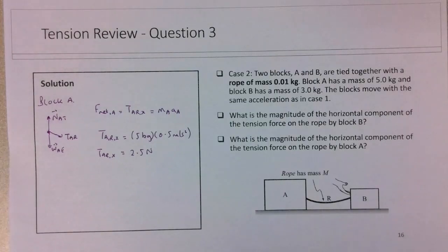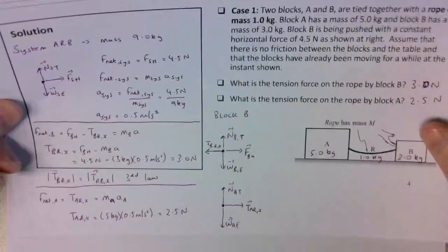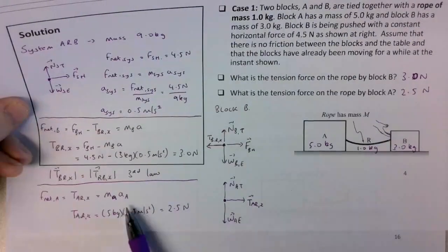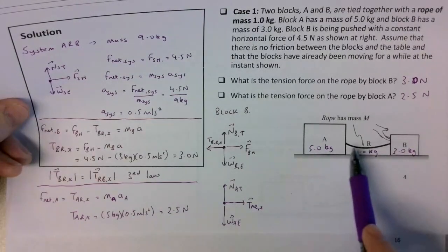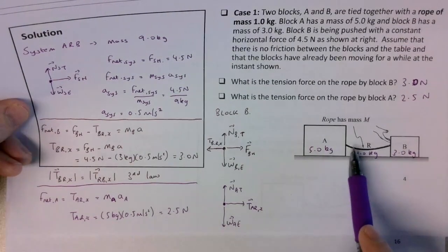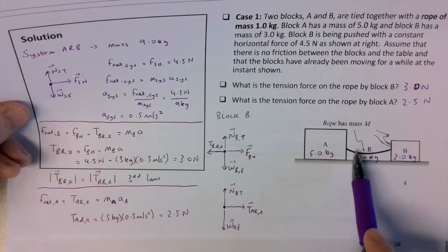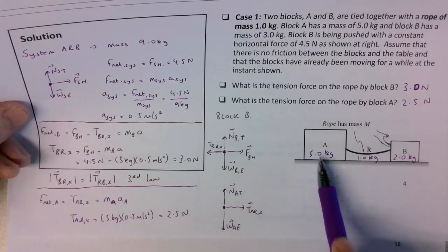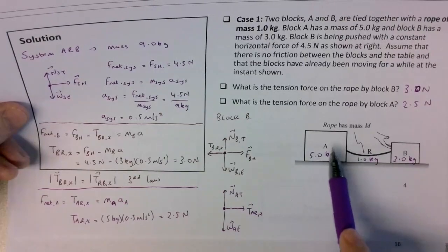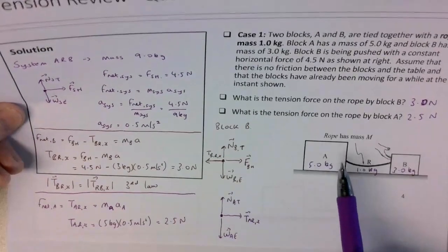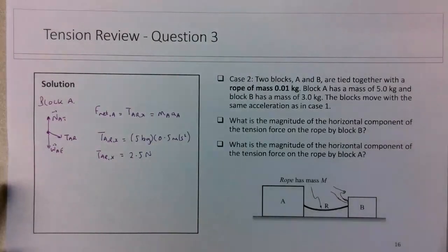So if I go back to the answers from question 1, down here, we determined that because the cases have the same acceleration and the tension force, the x component of the tension force is the only force responsible for accelerating, it's equivalent to the net force on block A. Because of the same mass and the same acceleration, the tension force on the rope by block A will be the same in both cases. That's an important point to note. So it's still equal to 2.5 newtons.